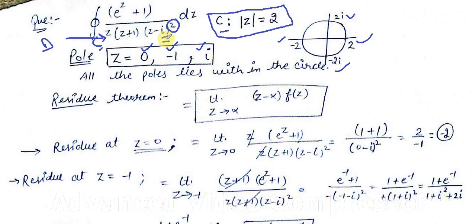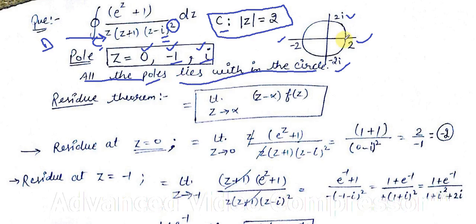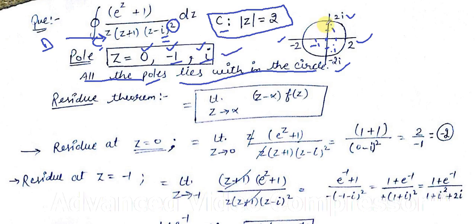All these poles — at 0, −1, and i — lie within the circle of radius 2. z = 0 is at the origin, z = −1 is on the real axis, z = +i is on the imaginary axis. Since all poles are located inside the circle, they will each contribute a residue.